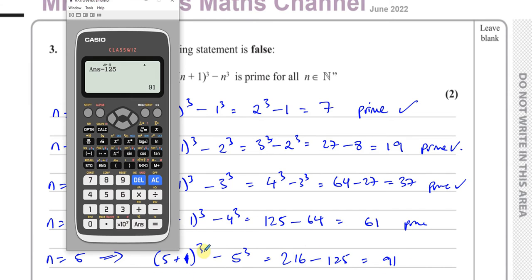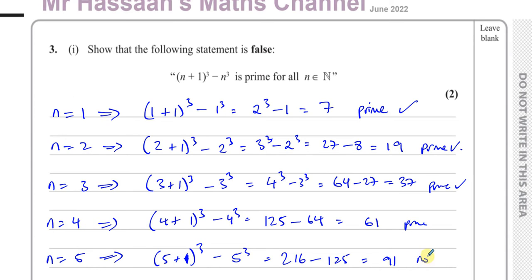Now let's see if 91 is prime. 7 goes into 91 because 12 sevens are 84, plus 7 is 91. Yes, dividing by 7 — it goes in 13 times. So 91 is not prime.